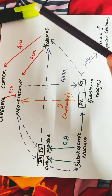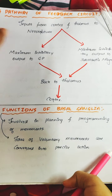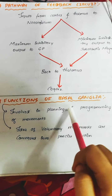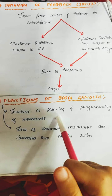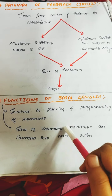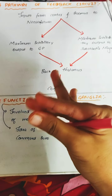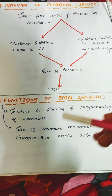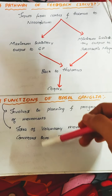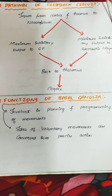The functions of the basal ganglia include planning and programming of movements. Ideas of voluntary movements are converted into precise actions — dancing, walking, and all movements are converted into precise coordinated actions. We will also look at the mechanism: the subthalamic nucleus sends excitatory fibers to the globus pallidus, but the globus pallidus sends inhibitory fibers (GABA) back to the subthalamus.